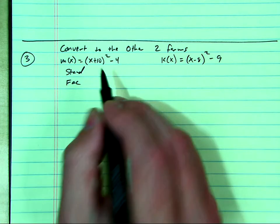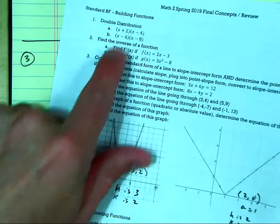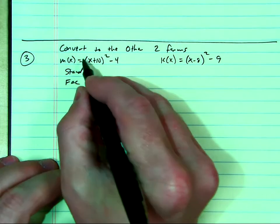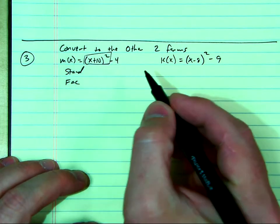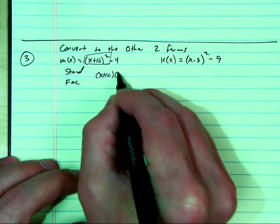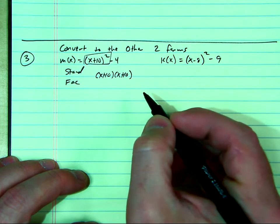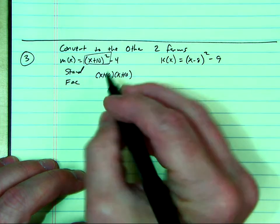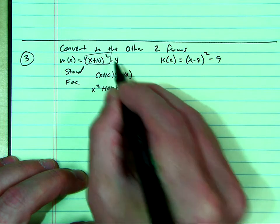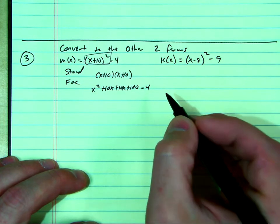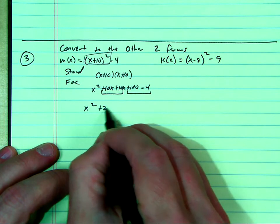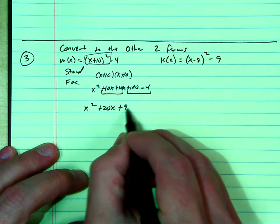This is like the very first skill we practiced on the very first video. You've got to remember how to do double distribution. Everybody's got to remember that this goes first because of order of operations. So it's x plus 10 times x plus 10. Again, you do double distribution slash FOIL on that, whatever you want to call it. x squared plus 10x plus 10x plus 100, and then bring the minus 4 right there. Then you've got two sets of like terms to collect. So this is x squared plus 20x plus 96.